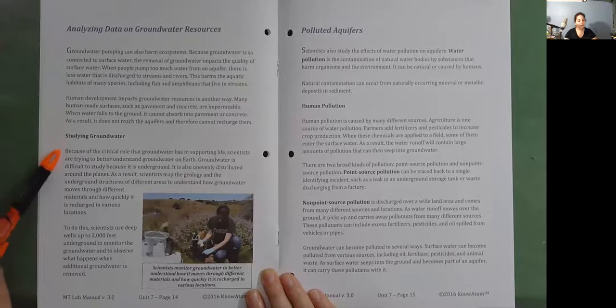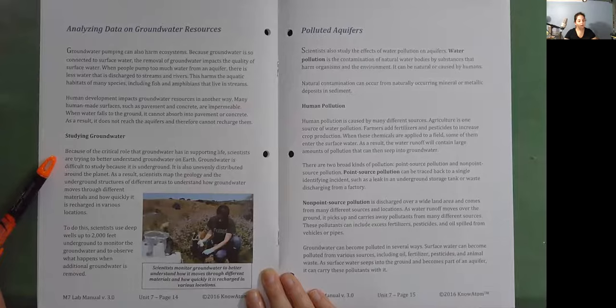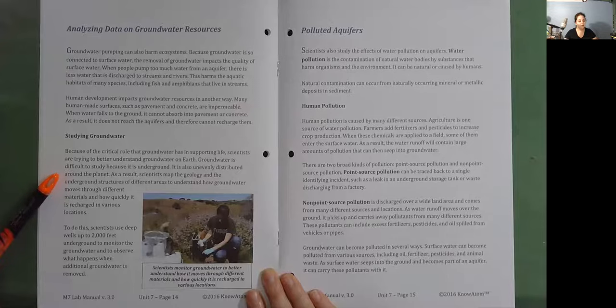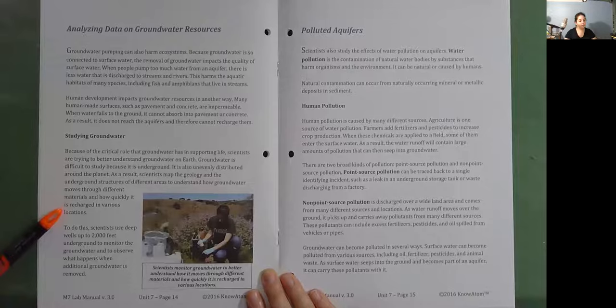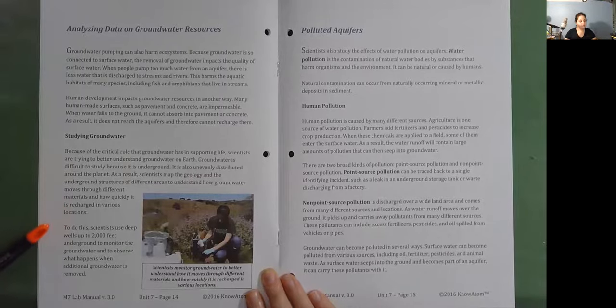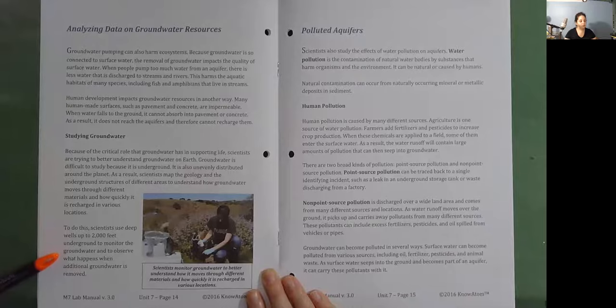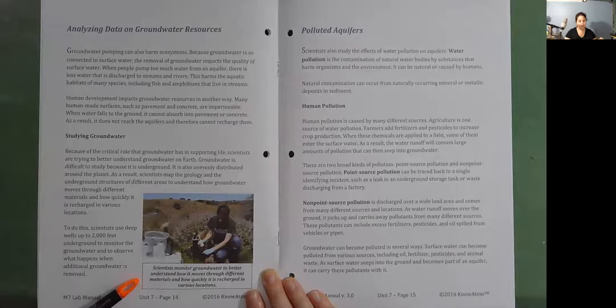Studying groundwater. Because of the critical role that groundwater has in supporting life, scientists are trying to better understand groundwater on Earth. Groundwater is difficult to study because it is underground. It is also unevenly distributed around the planet. As a result, scientists map the geology and the underground structures of different areas to understand how groundwater moves through different materials and how quickly it is recharged in various locations. To do this, scientists use deep wells up to 2,000 feet underground to monitor the groundwater and to observe what happens when additional groundwater is removed. Scientists monitor groundwater to better understand how it moves through different materials and how quickly it is recharged in various locations.